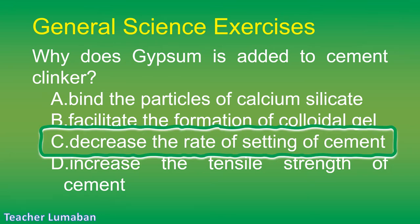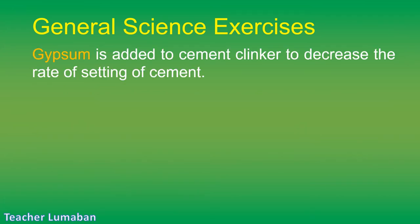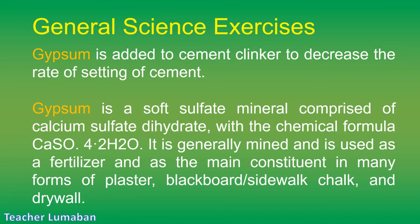The correct answer is Letter C: to decrease the rate of setting of cement. Gypsum is added to cement clinker to decrease the rate of setting of cement. Gypsum is a soft sulfate mineral comprised of calcium sulfate dihydrate, with the chemical formula CaSO₄·2H₂O. It is generally mined and used as a fertilizer and as the main constituent in many forms of plaster, blackboard chalk, and drywall.